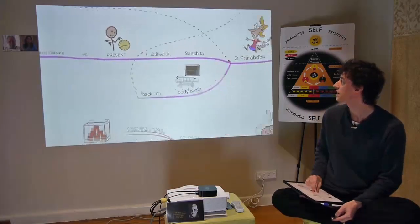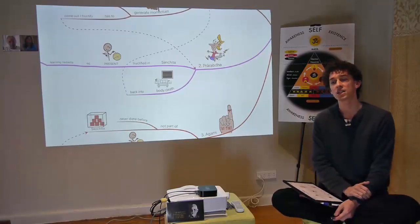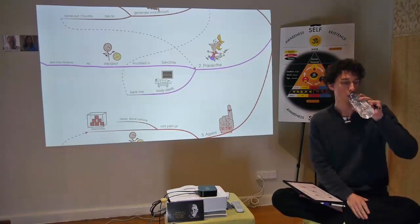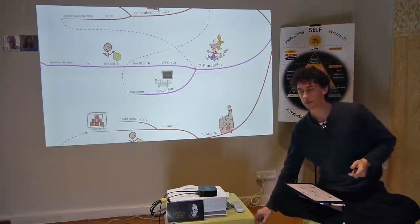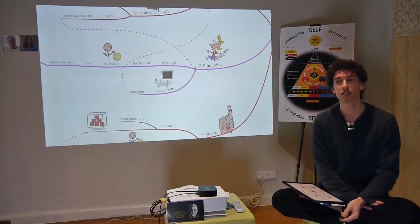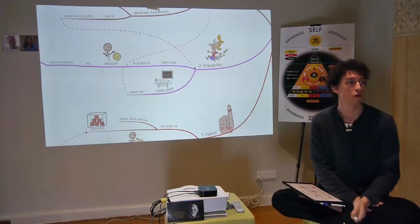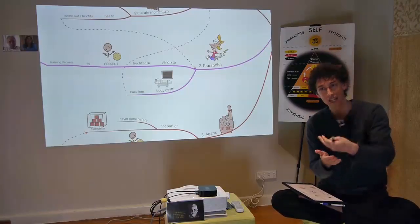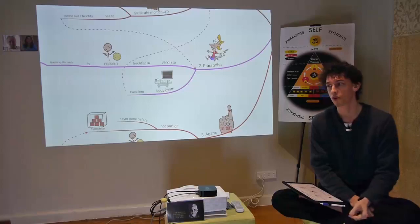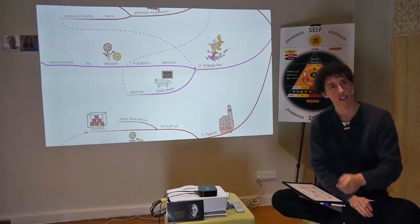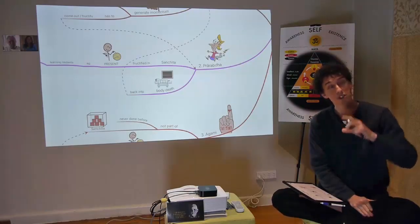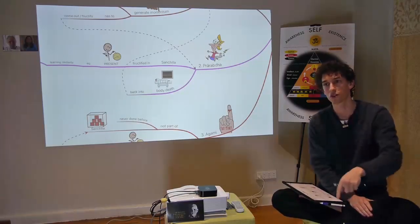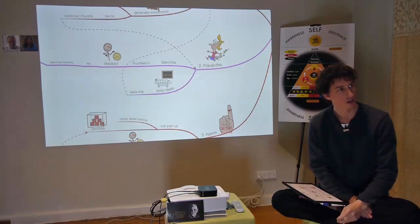Any form of study creates a Sanchita, which is why we are helplessly coming back to whatever it is we do come back to — because there's momentum. When the body dies, all Prarabdha is finished and the body dies. But Sanchita is not gone — it has nowhere to express itself through. So a new body has to continue the Sanchita. That is the cause of rebirth.